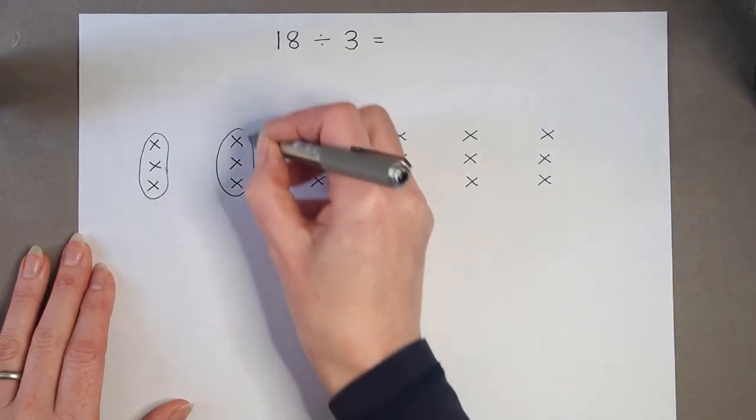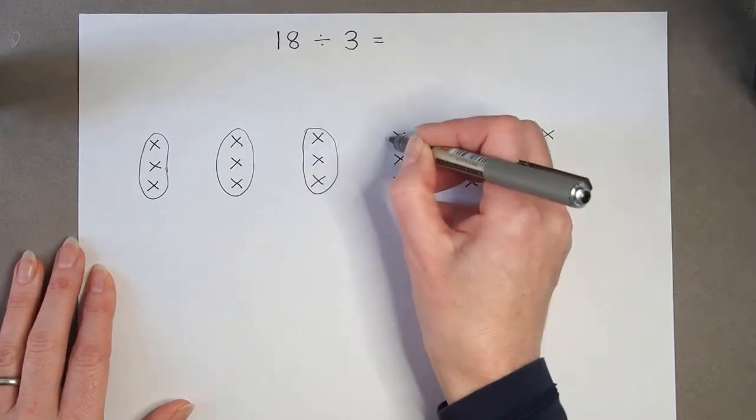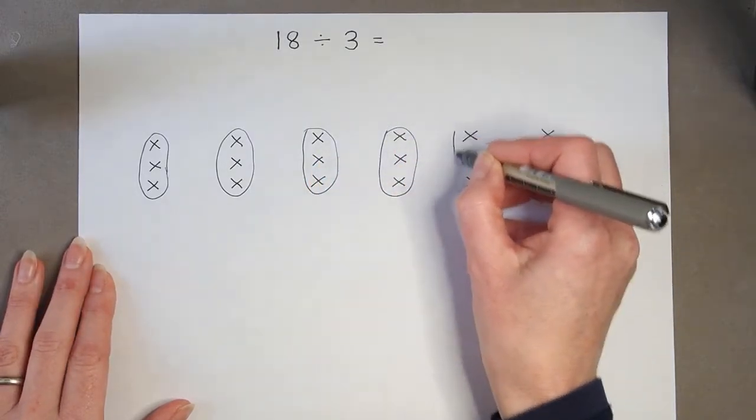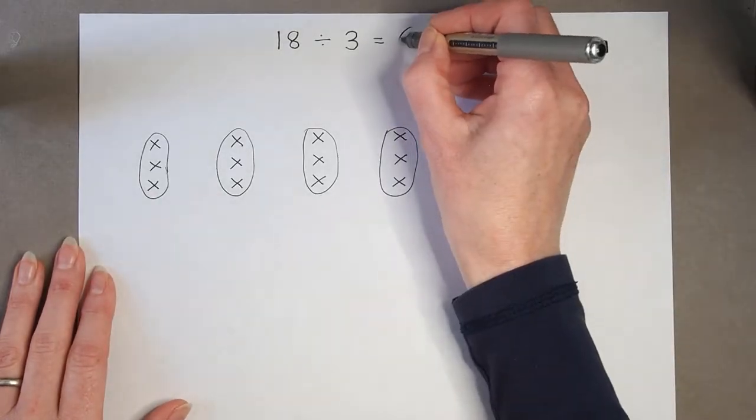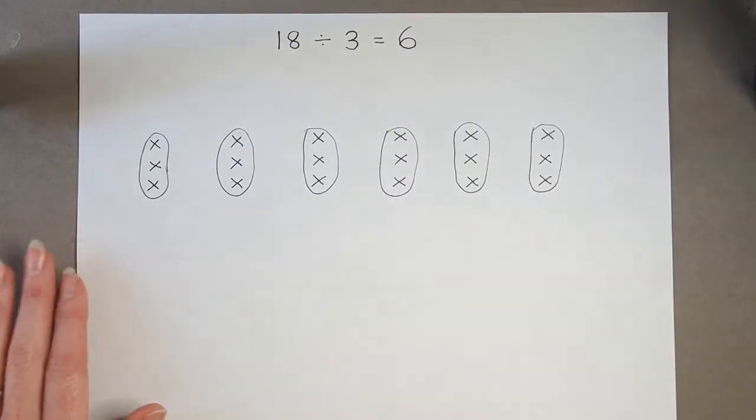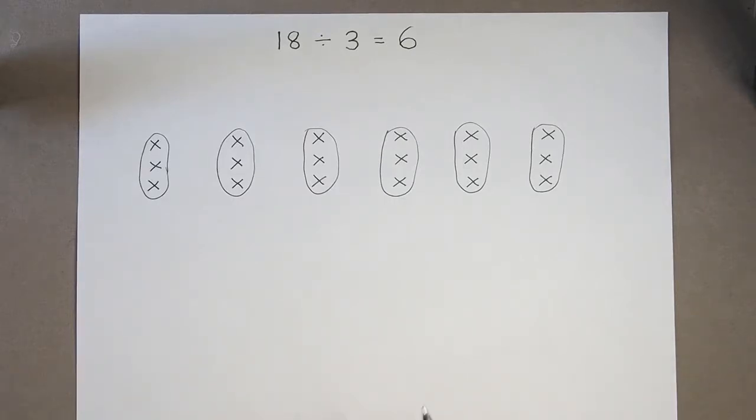1, 2, 3, 4, 5, 6. So altogether I have 6 groups. 18 divided by 3 makes 6. If I have 18 and I split it up into groups of 3, I get 6 groups of 3.